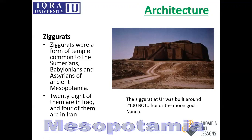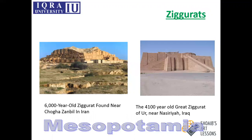The ziggurat shown on the slide was built in Nanna, constructed around 2100 BC to honor the moon god Nanna. The other two ziggurats shown include a 6,000-year-old ziggurat found near Chogha Zanbil in Iran, and one on the right side located in Nasiriyah, Iraq, called the Ziggurat of Ur.